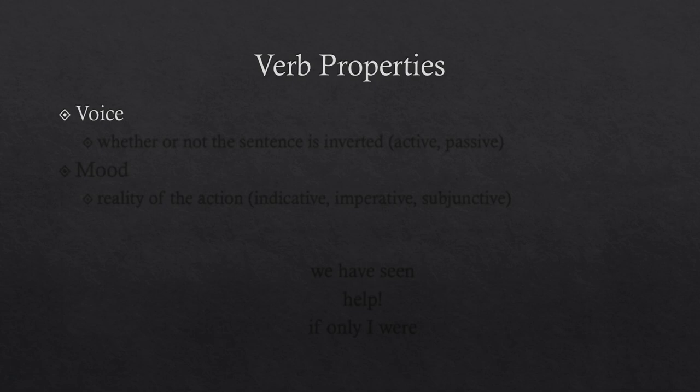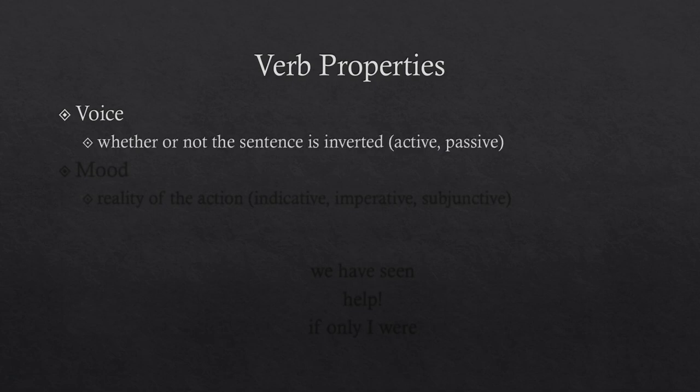A fourth property is voice — whether or not the sentence is inverted. We're talking about whether 'lightning strikes the tree' or 'the tree is struck by lightning.' Those two sentences convey the same thought, but we can invert the sentence so that the tree becomes the subject, which in the un-inverted sentence is actually the object. We call this active or passive. If I am actively aggressive, I am punching you in the face. If I am passively aggressive, something is happening to me. Whether the subject is acting or being acted upon.